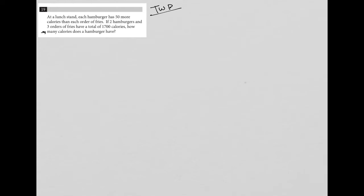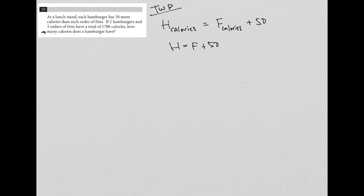So this first sentence is basically saying that a hamburger, H, in terms of calories — H calories equals fries calories plus 50. So H equals F plus 50. We're dealing with calories, so I don't have to write calories. Hamburgers equals whatever fries are plus an additional 50.